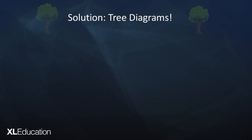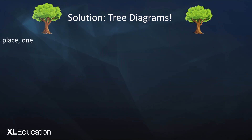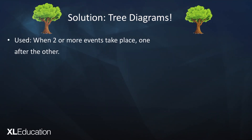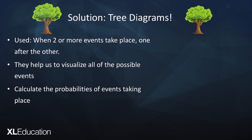I've decided to use tree diagrams to solve this problem. Tree diagrams are used when two or more events take place one after the other. They help us to visualize all of the possible outcomes and we can use them to calculate the probabilities of those outcomes.